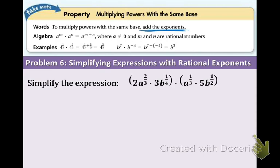So let's just jump into example six. We have 2a to the 2 thirds times 3b to the 1 fourth times a to the 1 third times 5b to the 1 half. That is definitely a mouthful. Okay, first thing, don't freak out, don't get overwhelmed, I know it looks weird, but this is what I recommend you do.